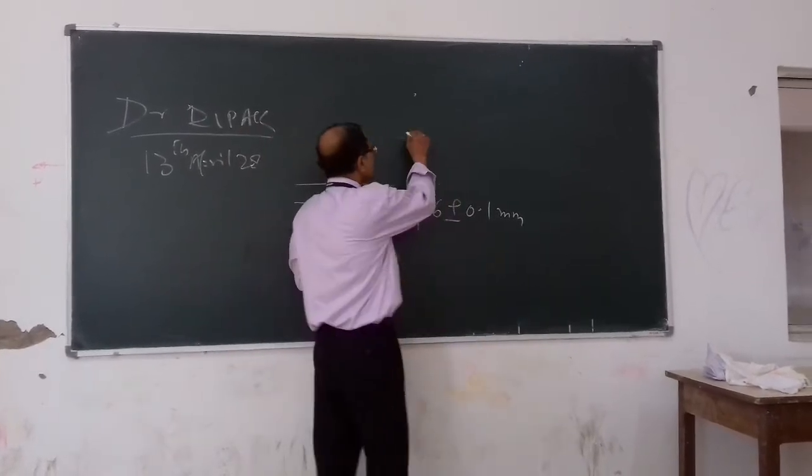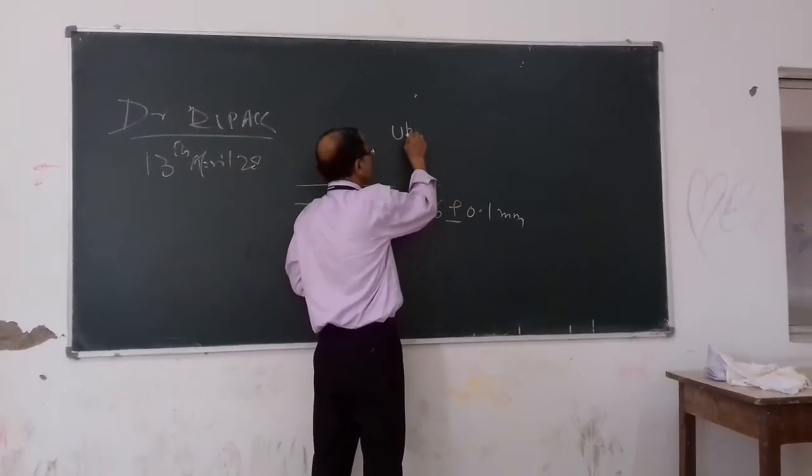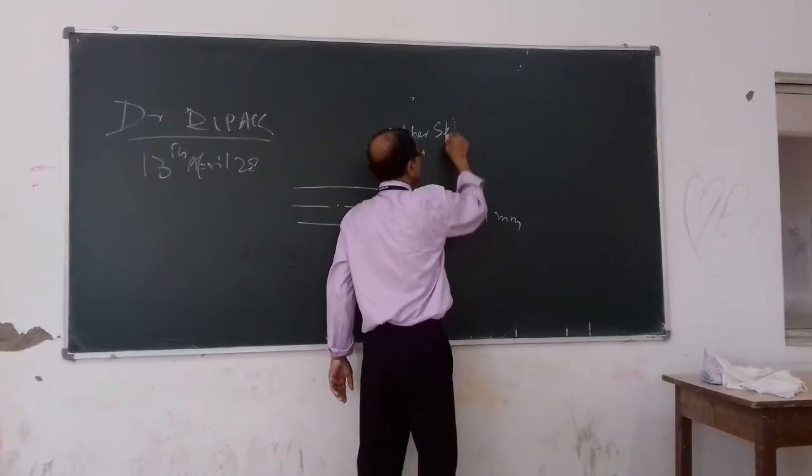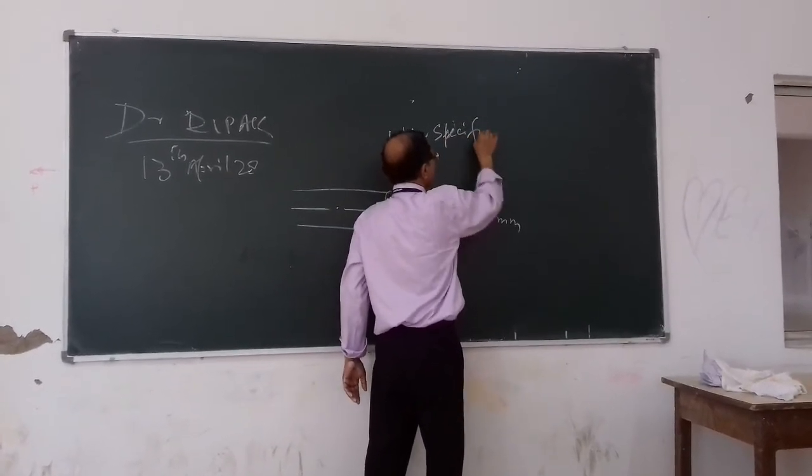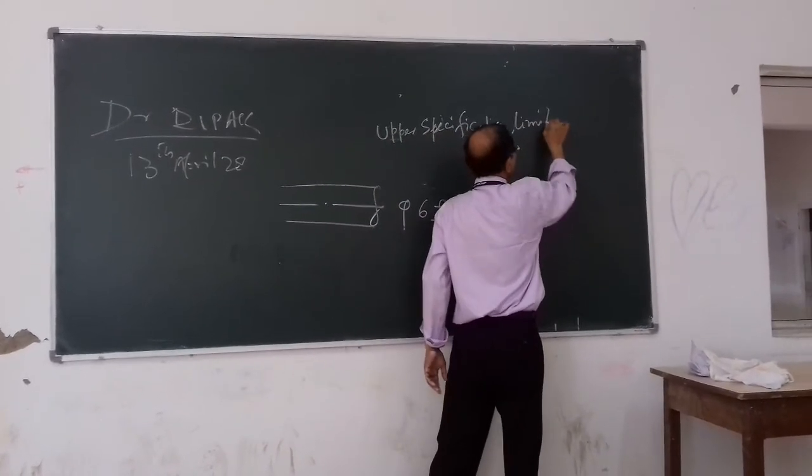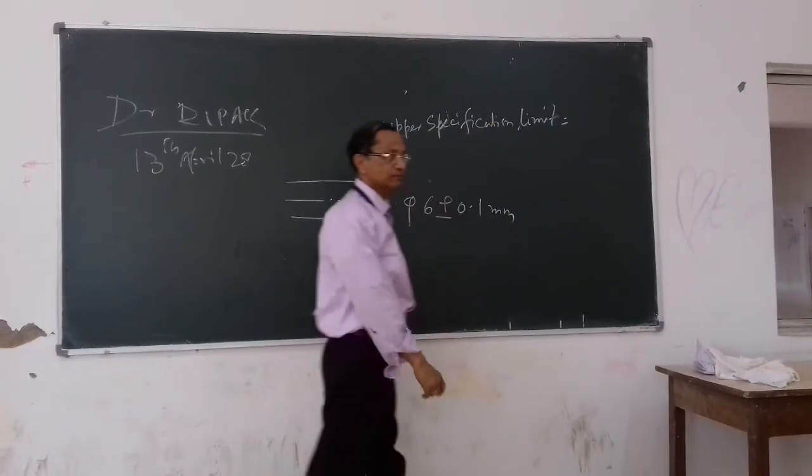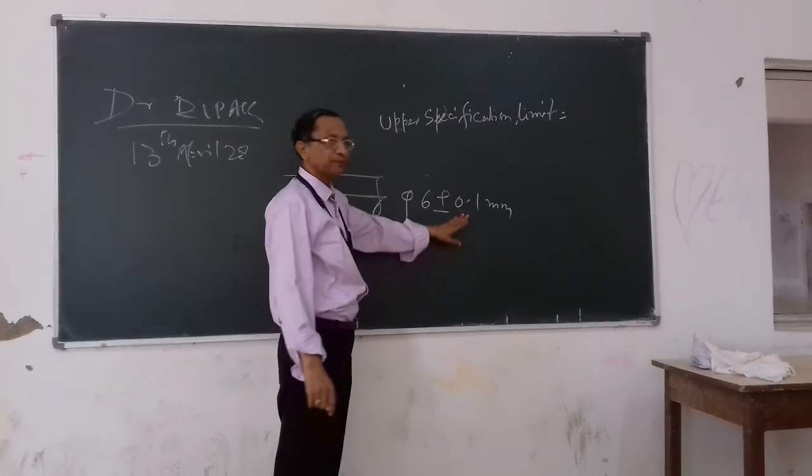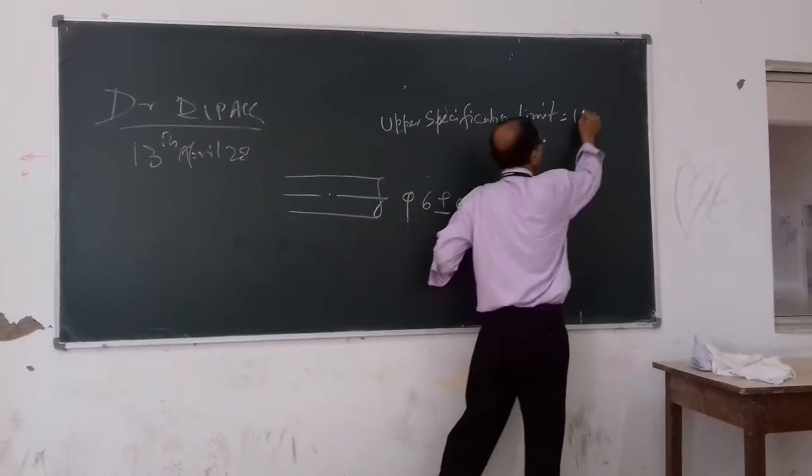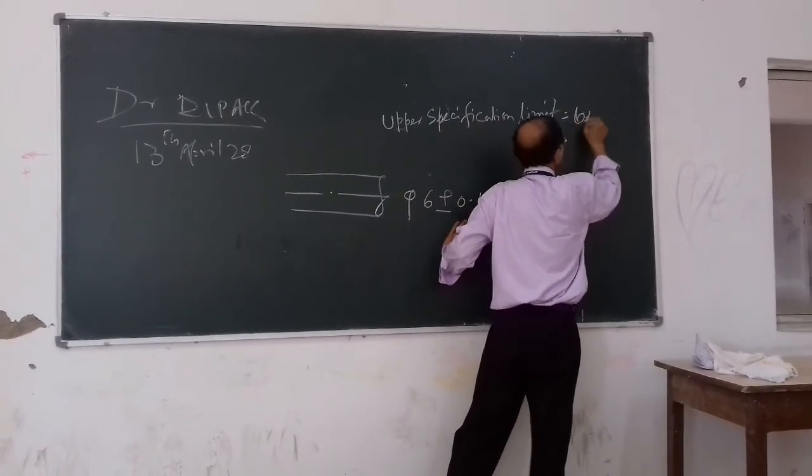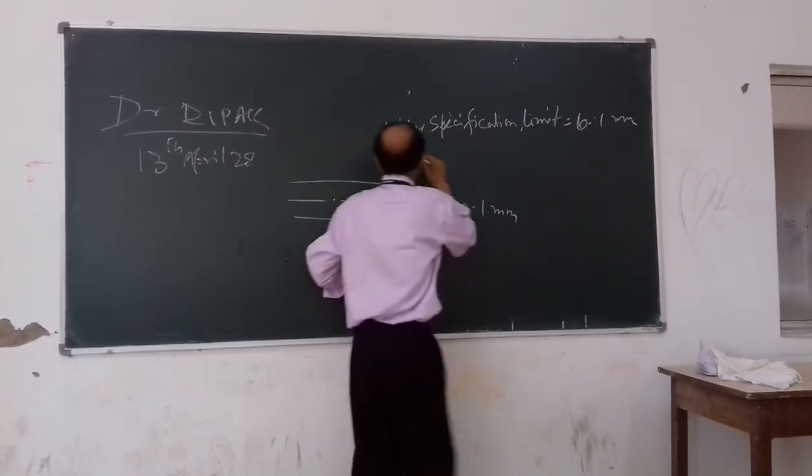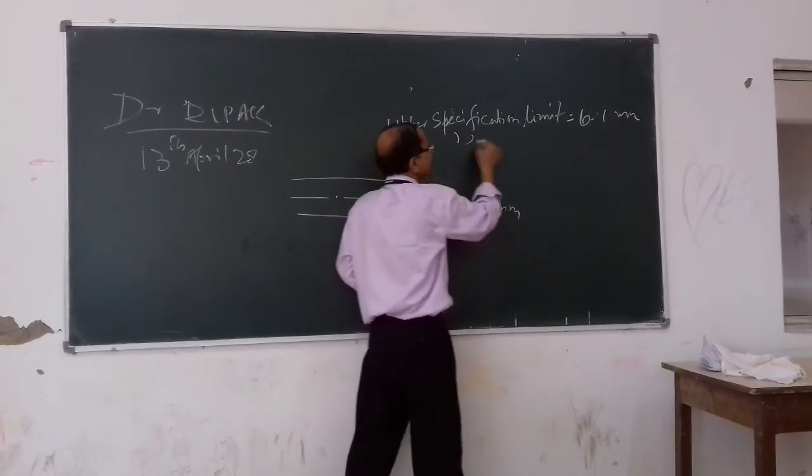It is our specification limit will be equal to what? Our specification limit? 6 plus 0.1. 6.1. Very good. 6.1. Then, what is the upper specification limit?